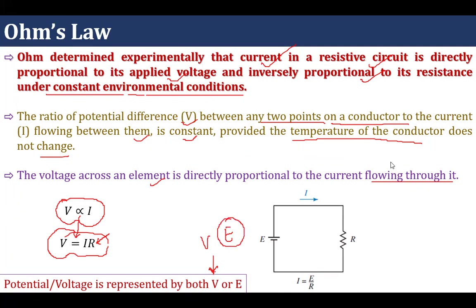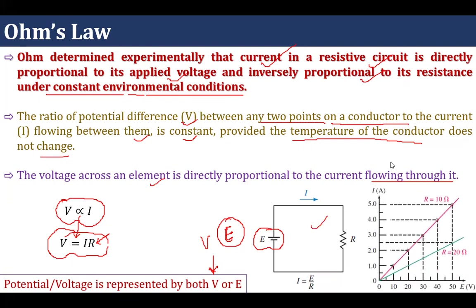Mathematically, V is directly proportional to I, and removing the proportionality sign gives us V = IR, where R is the resistance of the element. In some standard books, voltage is represented by either V or E — you do not need to be confused by this. This experiment which Ohm conducted can be understood through a circuit and a graph where the resistance value is 10 ohms.